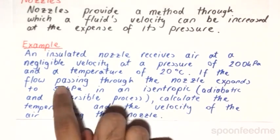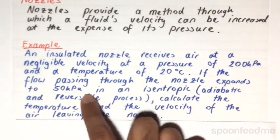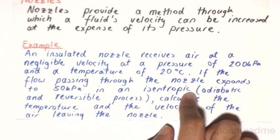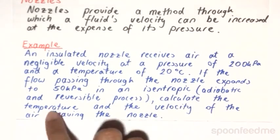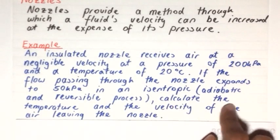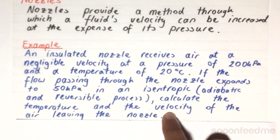If the flow passing through the nozzle expands to 50 kilopascals in an isentropic (that is, an adiabatic and reversible) process, calculate the temperature and the velocity of the air leaving the nozzle.